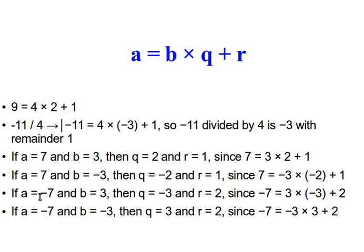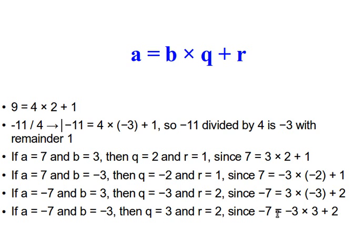If A equals negative 7 and B is 3, then Q is negative 3 and R equals 2, because negative 7 equals 3 times negative 3 plus 2 — three times negative three is negative nine, and negative nine plus two is negative seven. Notice that R is always positive. The last example: if A equals negative 7 and B equals negative 3, then Q is 3 and R is 2, because negative 7 equals negative 3 times 3 plus 2.